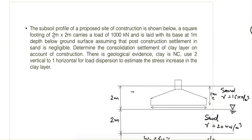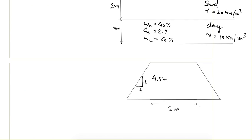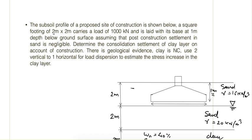Now let's see another problem, which is a very good question because it involves load dispersion. The question is: the soil profile of a proposed construction site is shown. A square footing carrying a load of 1000 kilonewtons is laid with its plate 1 meter depth below the ground surface.